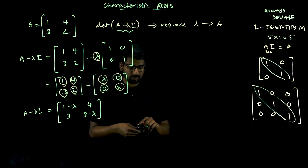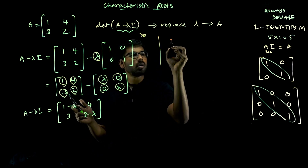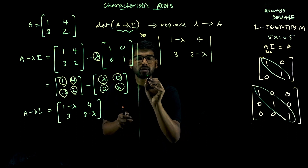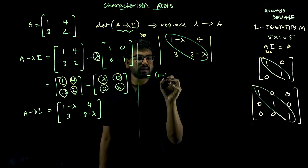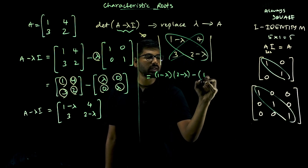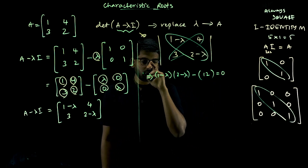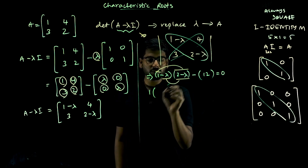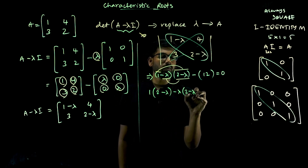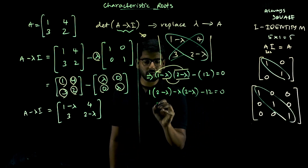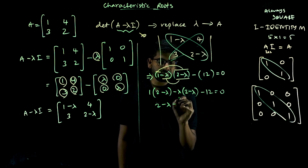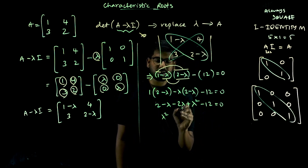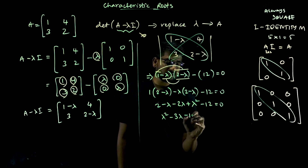Next, find the determinant of A minus lambda I. Determinant of [[1 minus lambda, 4], [3, 2 minus lambda]] equals the product of diagonal elements: (1 minus lambda)(2 minus lambda) minus 3 times 4, that is minus 12, equals zero. Expanding: 1 times 2 minus lambda, minus lambda times 2 minus lambda: 1 into 2 is 2, 1 into minus lambda is minus lambda, minus lambda into 2 is minus 2 lambda, minus lambda into minus lambda is lambda squared, minus 12 equals zero. So lambda squared minus lambda minus 2 lambda equals lambda squared minus 3 lambda, and 2 minus 12 equals minus 10 equals zero.